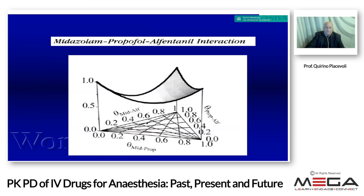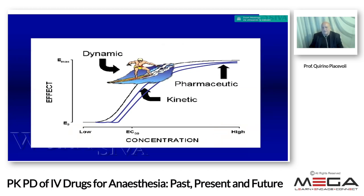Here is another representation — an isobologram of midazolam, propofol, and alfentanil interaction. This is a very important representation. Usually in the OR I have observed 100 anesthesiologists and most of them produce anesthesia that is like surfing: up and down, up and down — and also their coronary artery pressures go up and down. What we want for our patients is that the dynamic and kinetic state between effect and concentration must be very, very stable. In this way we are sure that cardiac performance, respiratory performance, and all clinical manifestations during the surgical procedure remain very stable.